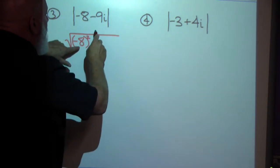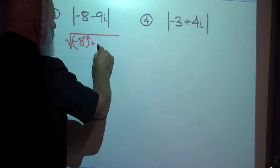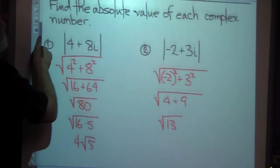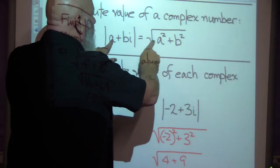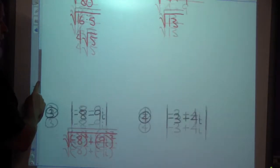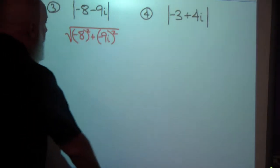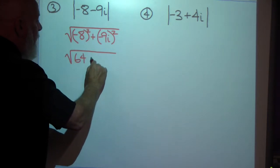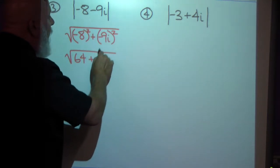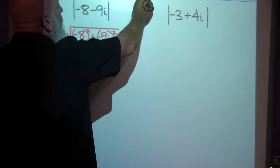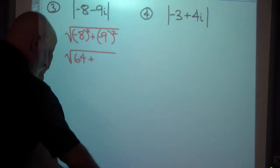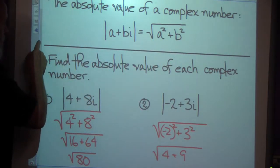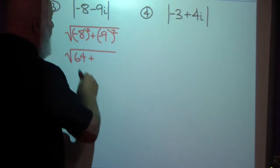I'm going to square this one and add this one squared, following the formula: the absolute value is the square root of the first number squared plus the second number squared. This is 64 — negative 8 times negative 8 is 64 — plus 81. I accidentally wrote the 'i' in there, but the formula just uses a and b without the i, so I apologize for that.